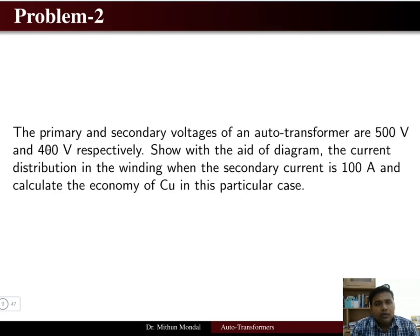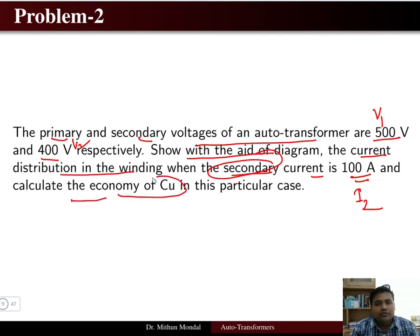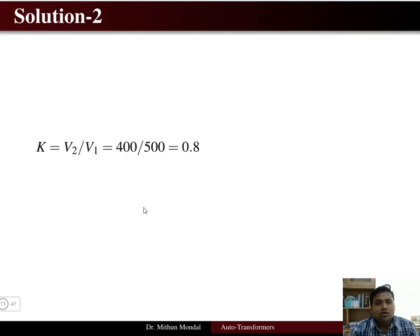Problem two: the primary and secondary voltages of an auto transformer are 500 volts and 400 volts respectively, so V1 = 500 V and V2 = 400 V. With the help of a diagram, find the current distribution in the winding when the secondary current I2 is 100 ampere. Also calculate the economy of copper when a two winding transformer is converted to an auto transformer.